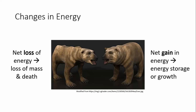Changes in energy available to an organism cause changes in the organism. A net loss of energy means the organism loses mass — losing tissue or cells, or cells getting smaller as materials are broken down for energy. If this continues long enough and cells can no longer be powered, it can cause death. A net gain in energy causes energy storage or growth — like a plant storing energy in its roots, or a person gaining fat weight.